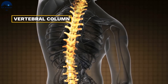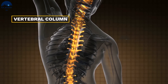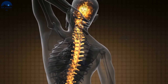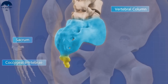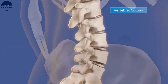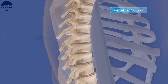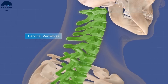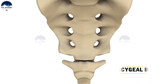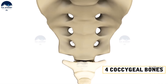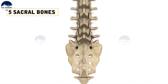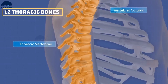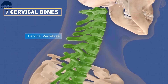The vertebral column extends from the base of the skull and forms the main framework of the trunk. The vertebrae are divided into different regions: coccygeal vertebrae, sacrum, lumbar vertebrae, thoracic vertebrae, and cervical vertebrae. There are four coccygeal bones fused together in adults as one bone, also called the tail bone. Five sacral bones are fused in adults as one bone. There are five lumbar bones, 12 thoracic bones, and 7 cervical bones.